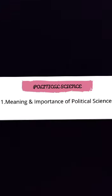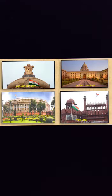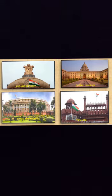Firstly, let us understand the meaning of political science. Political science is one of the social sciences dealing with the political activities of man. What are the political activities of man? It may be voting, criticizing the government, standing in elections, etc. In other words, political science means it is a systematic study of the government by the scientific methods available.